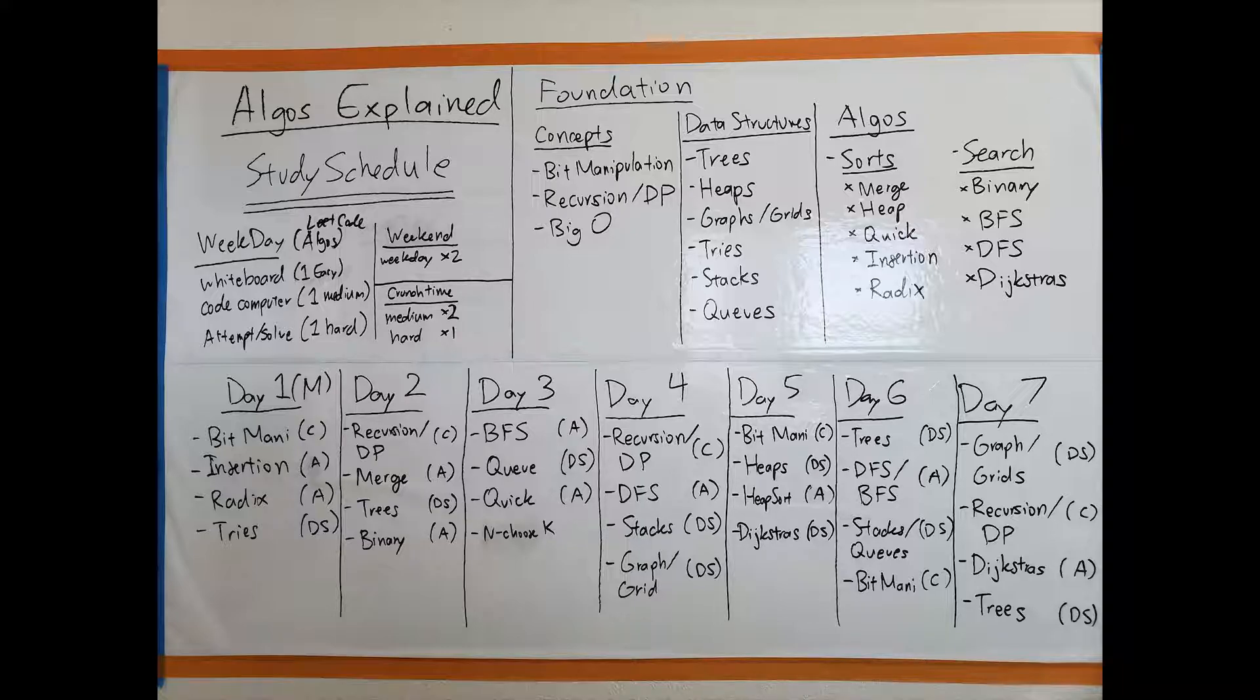For algorithms, almost all of these are important. For the sorts, I would say insertion and radix may be one of the lesser important things. Merge, heap, quick are important. Merge sort is probably going to be one of your best friends. In terms of these sorts, I want you to be able to code them.